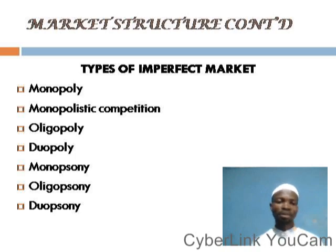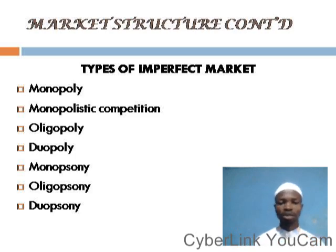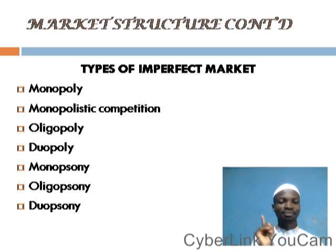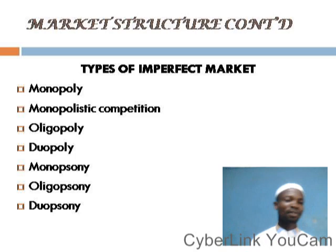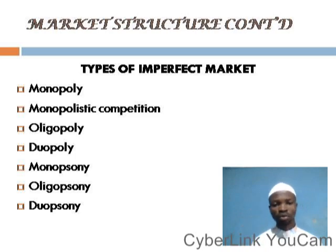Oligopoly is a market situation that involves few sellers, so a market involving few sellers is described as an oligopoly. Duopoly — 'duo' means two — so duopoly is an imperfect market where we have two sellers. Monopsony is an imperfect market that involves a single buyer. Oligopsony is an imperfect market where we have few buyers. Duopsony is an imperfect market that involves two buyers.